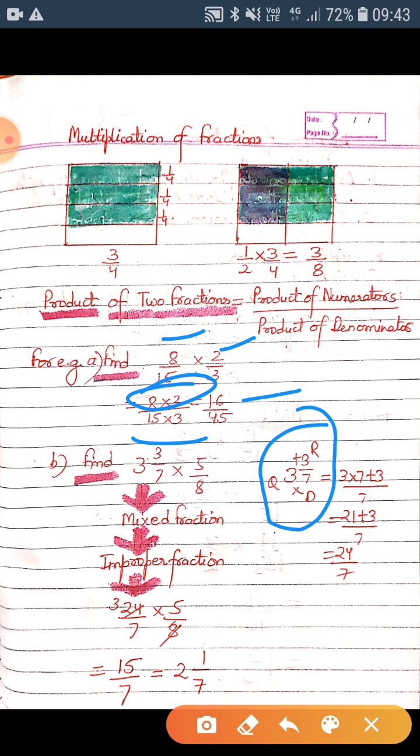That is seven into three, which is twenty-one. Twenty-one plus three is twenty-four. So we have changed this mixed fraction into twenty-four by seven. Now the other steps will be the same: twenty-four by seven into five by eight.